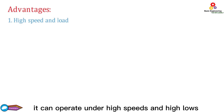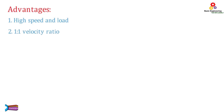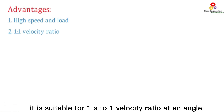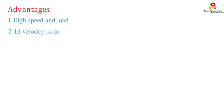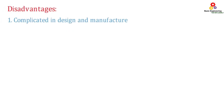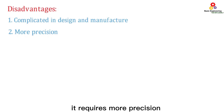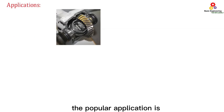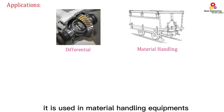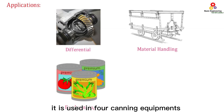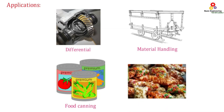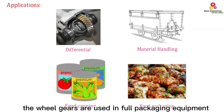Advantages of bevel gear: It can operate under high speeds and high loads. It is suitable for a 1:1 velocity ratio at an angle. Disadvantages: It is complicated in design and manufacture, and it requires more precision. Applications: The popular application is the automobile differential. It is used in material handling equipment, food canning equipment, and food packaging equipment.